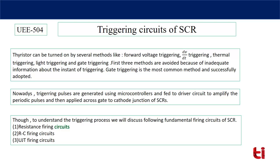A thyristor can be turned on by several methods like forward voltage triggering, dV/dt triggering, thermal triggering, light triggering, and gate triggering. The first three methods — forward voltage triggering, dV/dt triggering, and thermal triggering — are generally not preferred.